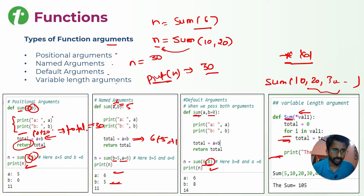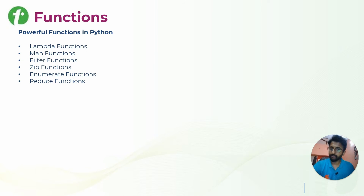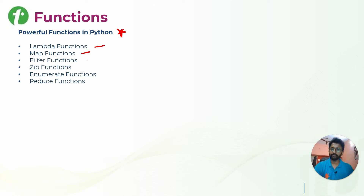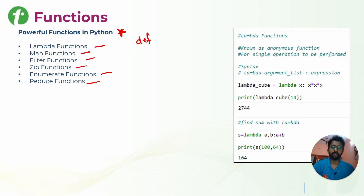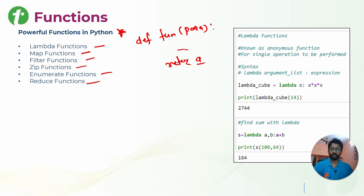There are several powerful built-in functions in Python that are really important and commonly discussed in interviews: lambda, map, filter, zip, enumerate, and reduce functions. We will see them one by one. For lambda functions, when you define a regular function it takes two to three lines, but if you want a single-line function definition, you use a lambda function.